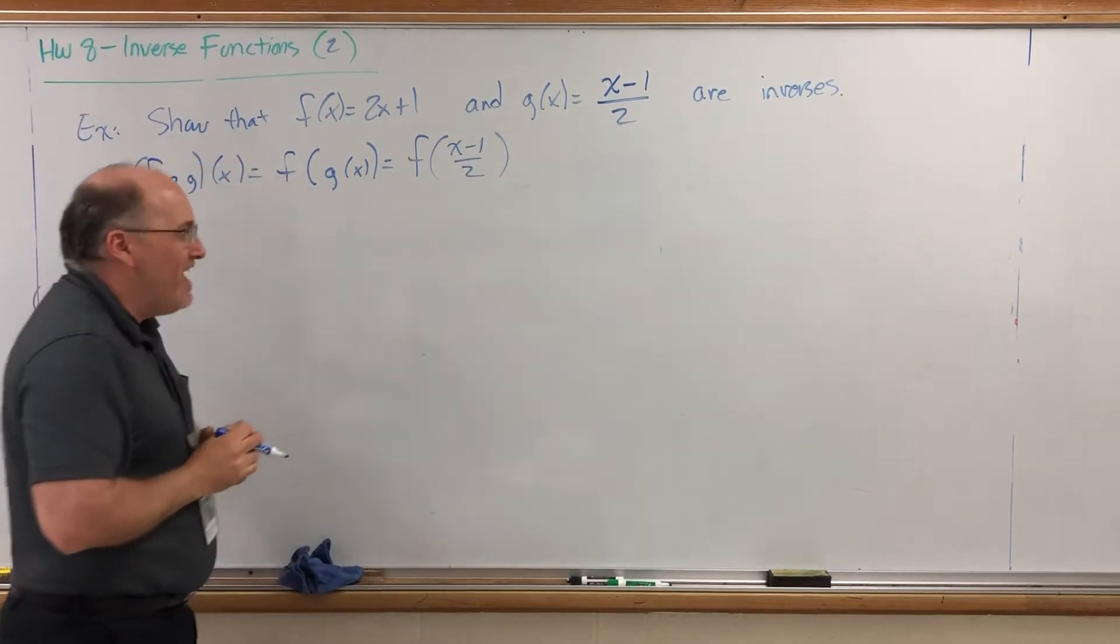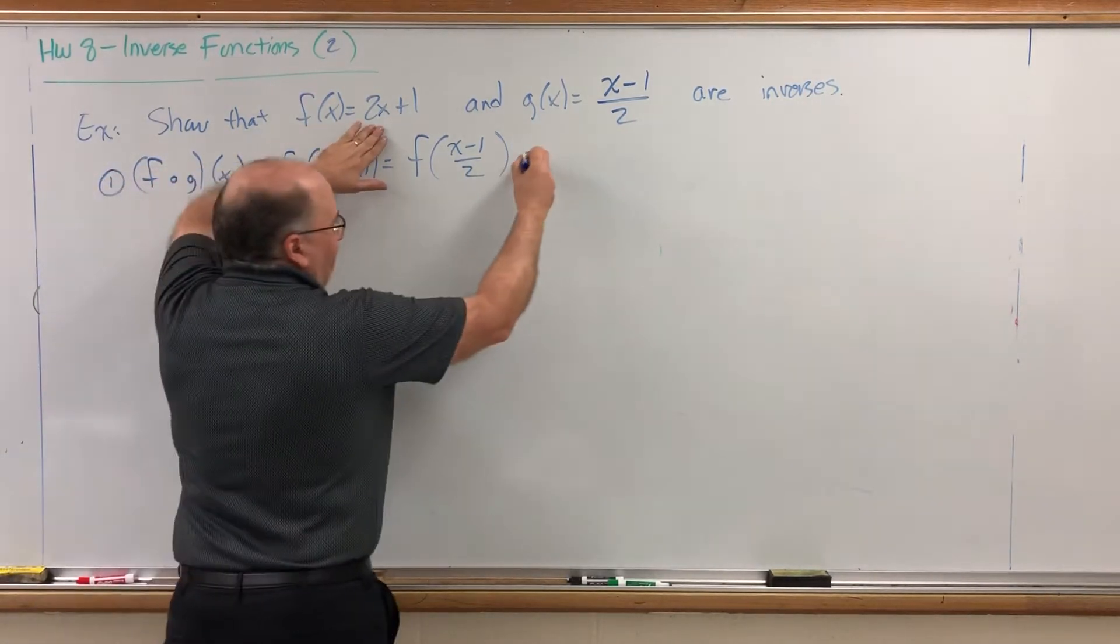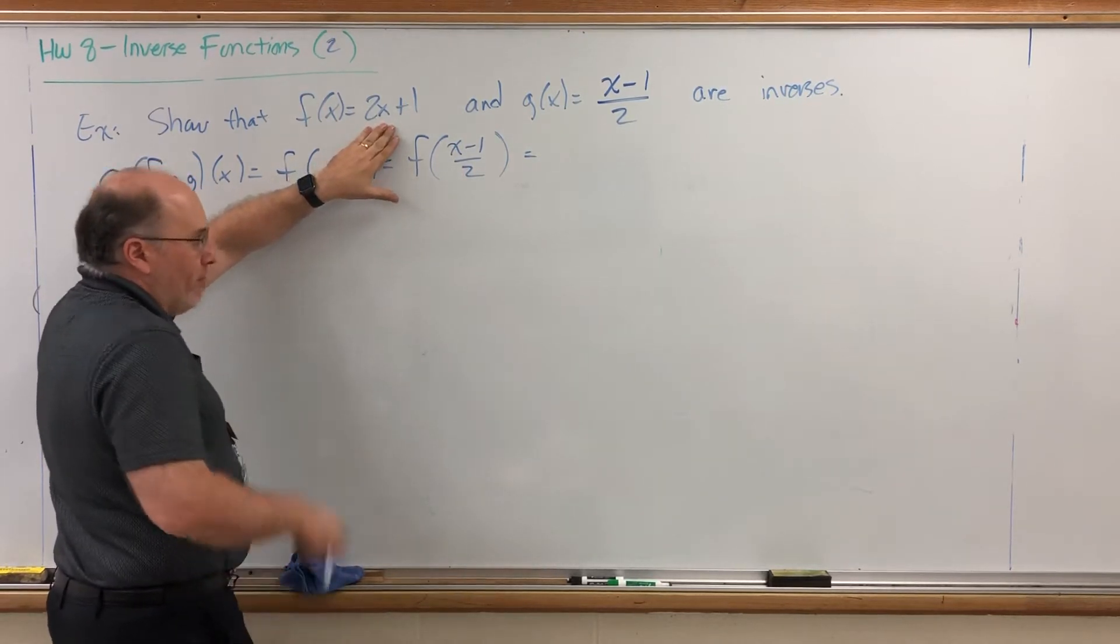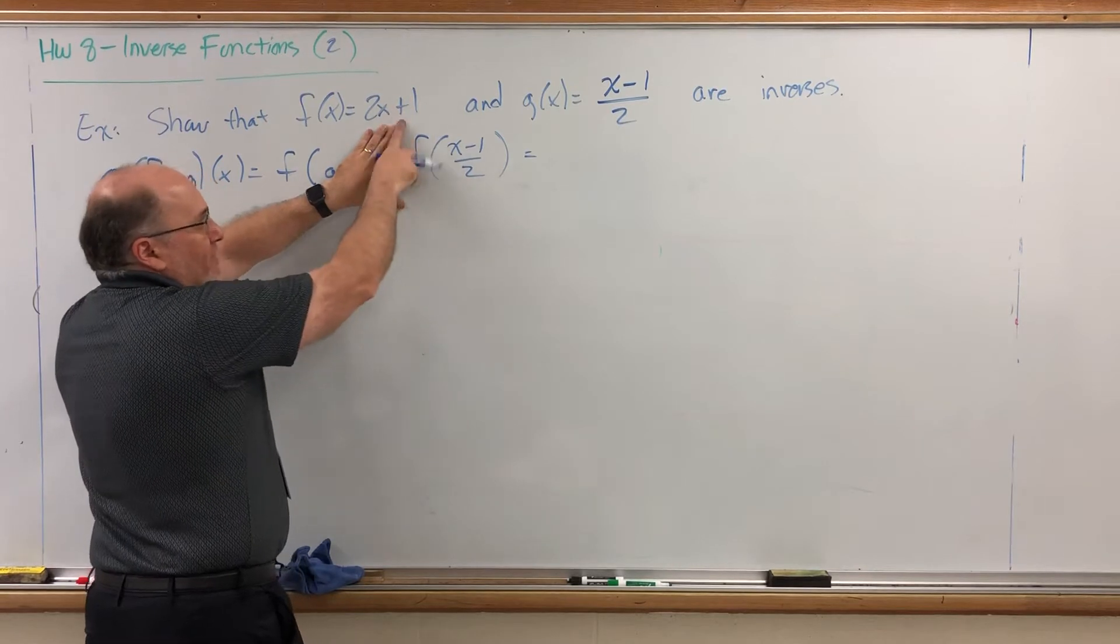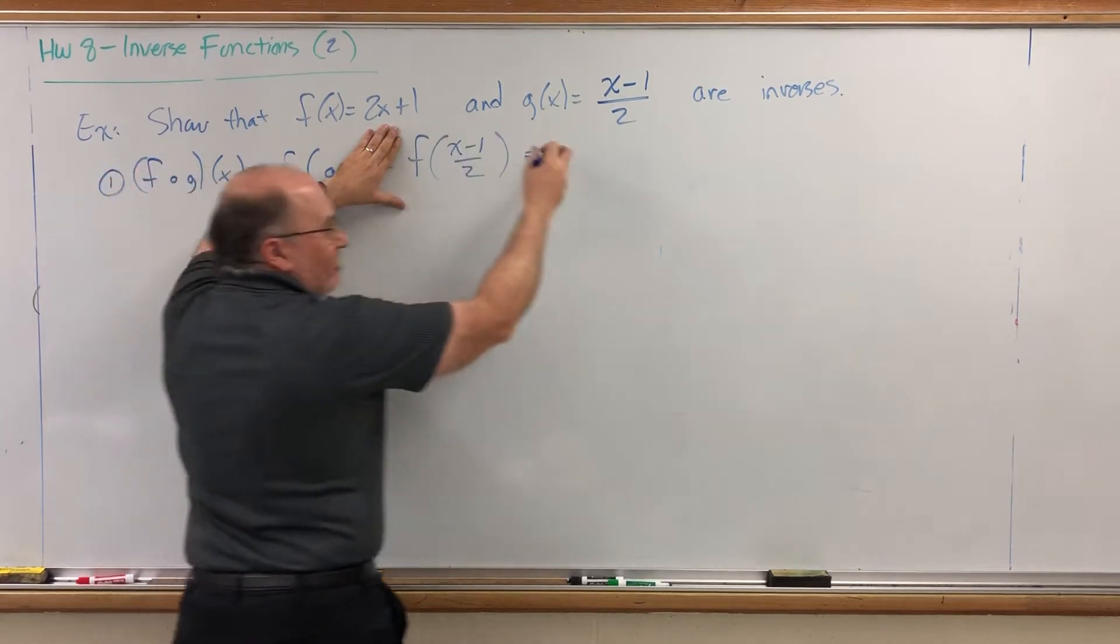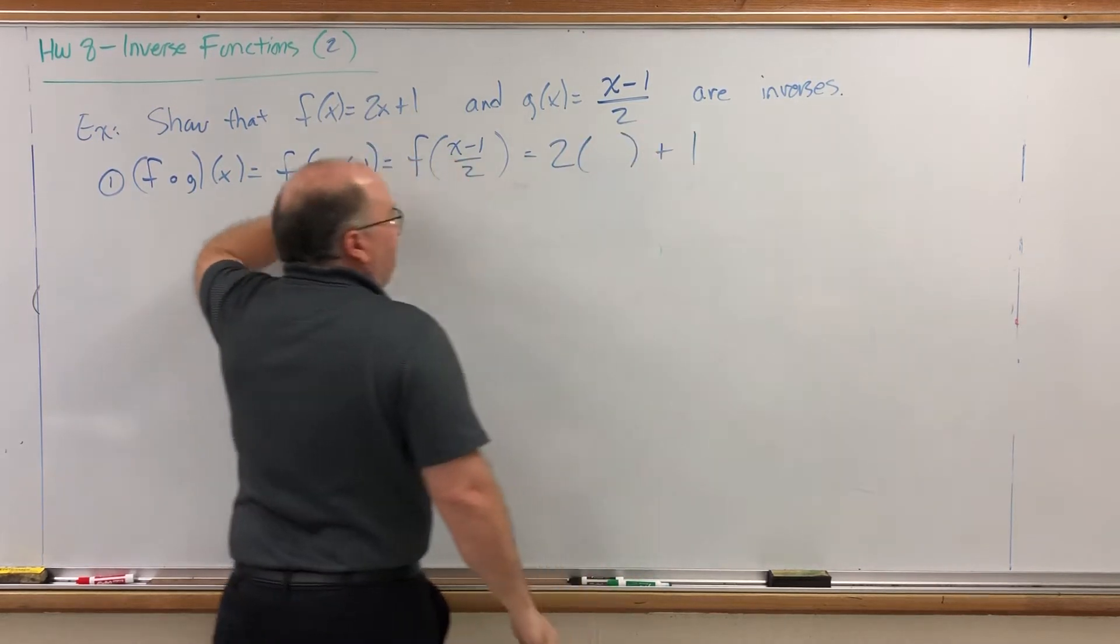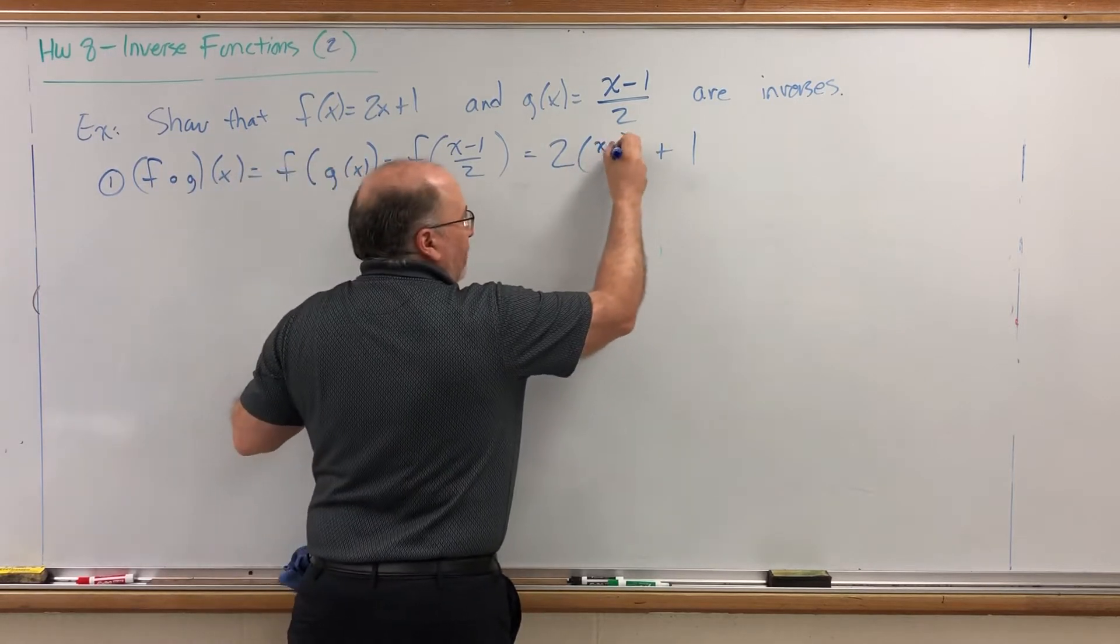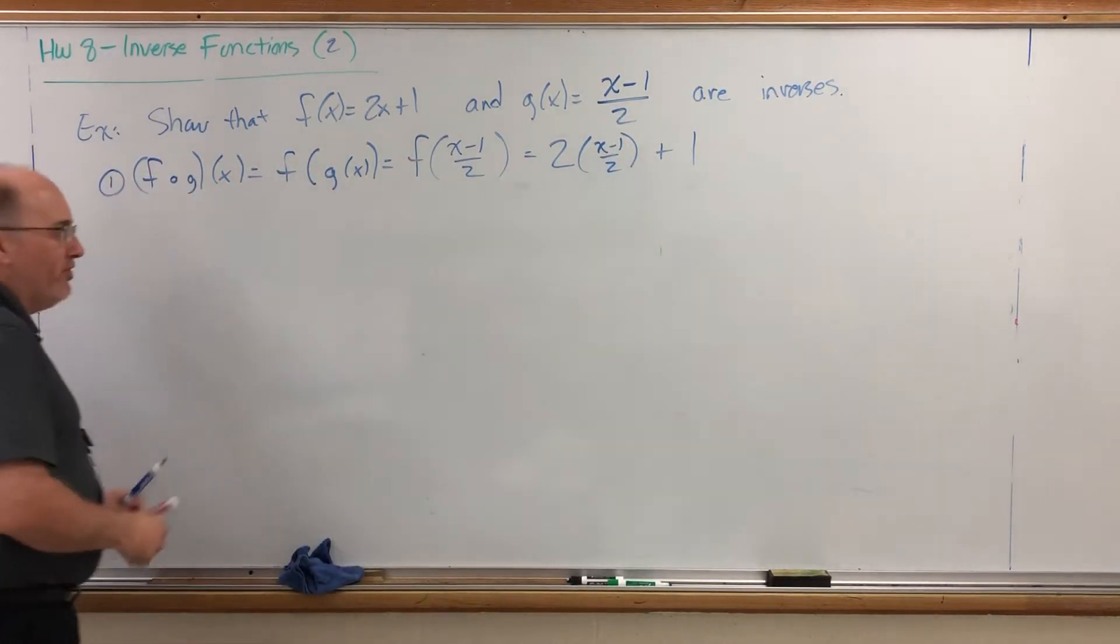g of x is x minus 1 over 2. We still have to put that into f. And now put that into f. f says I'm going to do 2x plus 1 to this. Remember how to take the function value of an expression. Copy the function with parentheses instead of x's. Instead of 2x plus 1, 2 parentheses plus 1. And then fill in the parentheses with the input x minus 1 over 2.